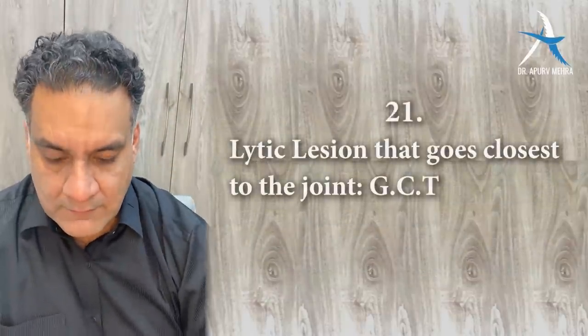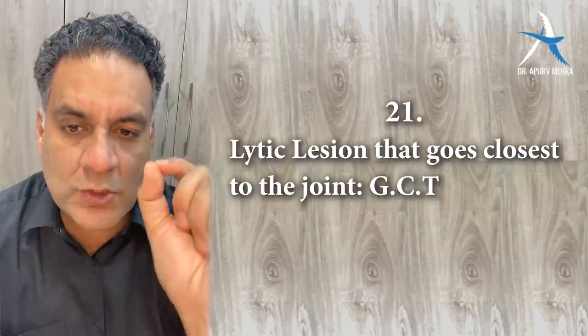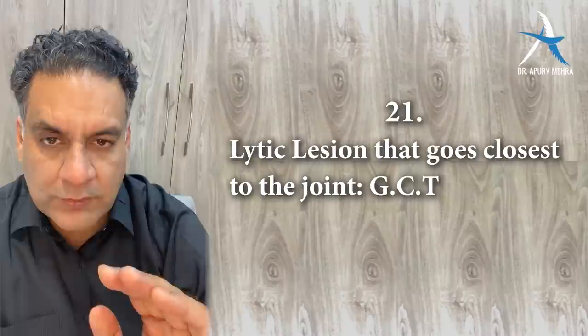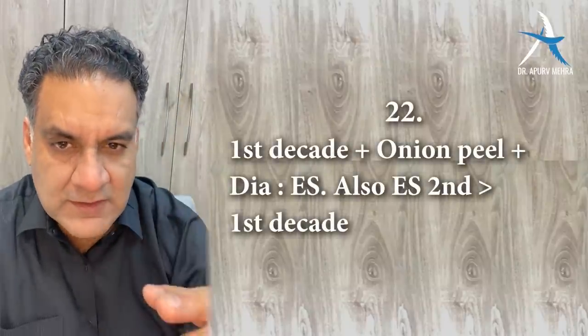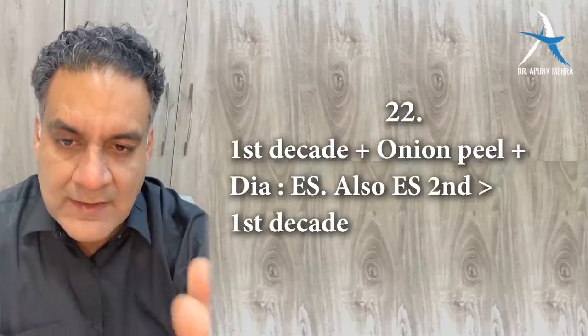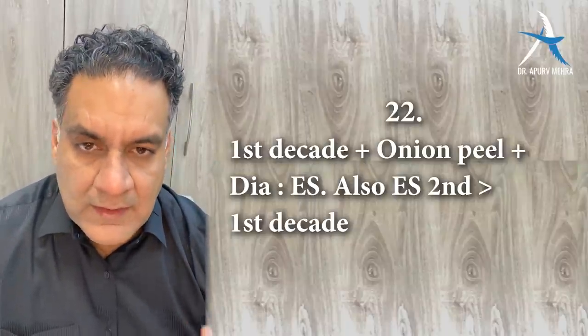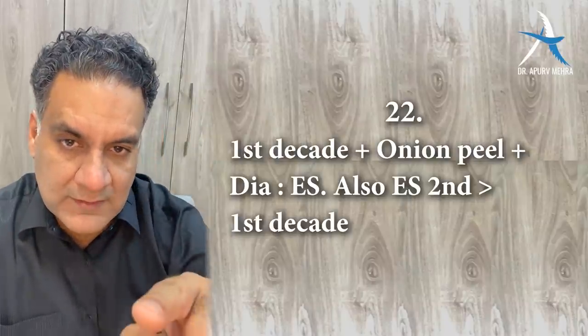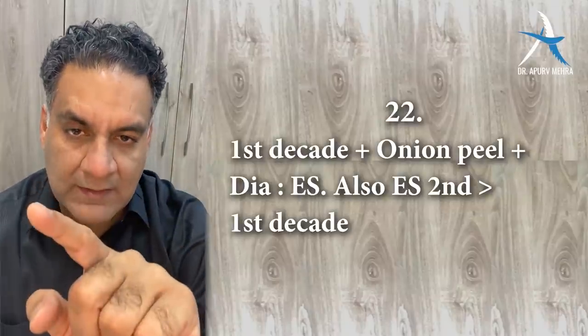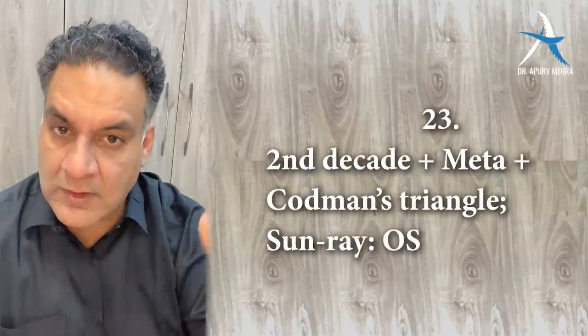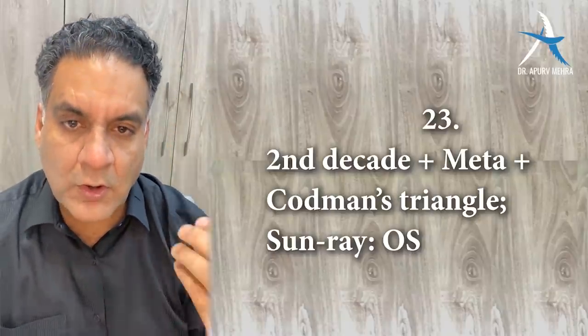Point number twenty-one: cystic lesions close to the joint — giant cell tumor. Remember that. First decade, diaphyseal lesion with onion peel appearance — Ewing's sarcoma. Also remember: Ewing's is most common in the first decade but actually more common in the second decade. Second decade, metaphyseal lesion with Codman's triangle or sunray appearance — osteosarcoma.